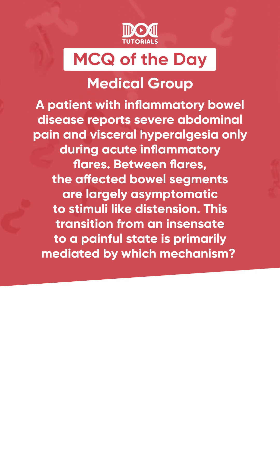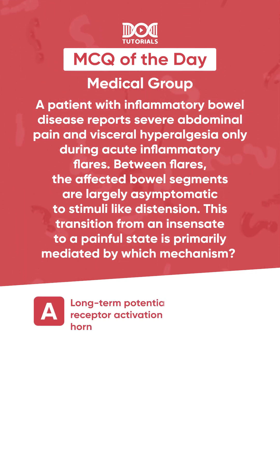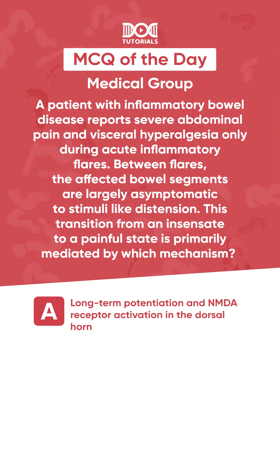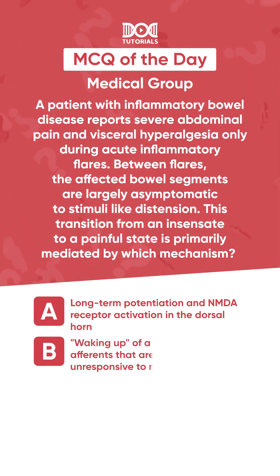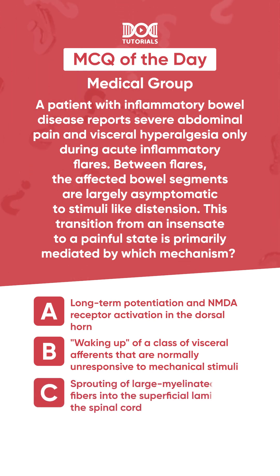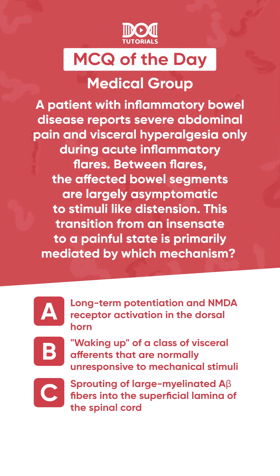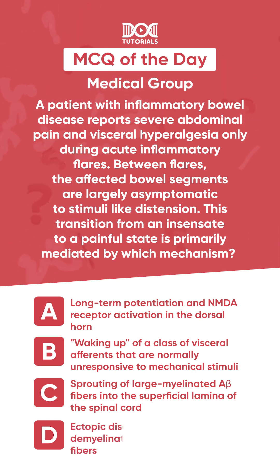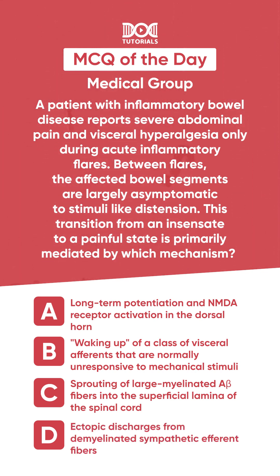Options. A: long-term potentiation and NMDA receptor activation in the dorsal horn. B: waking up of a class of visceral afferents that are normally unresponsive to mechanical stimuli. C: sprouting of large myelinated A-beta fibers into the superficial lamina of the spinal cord. D: ectopic discharges from demyelinated sympathetic afferent fibers.